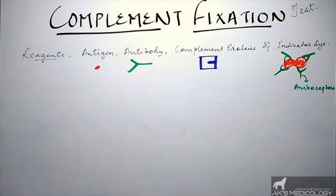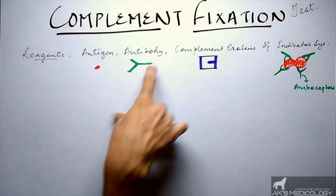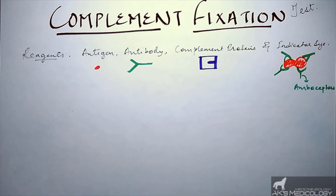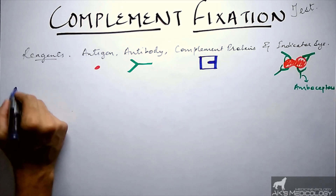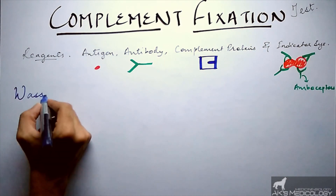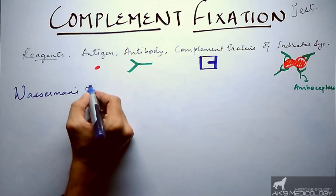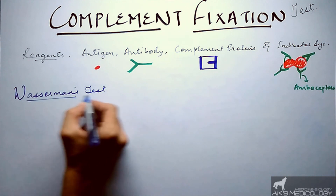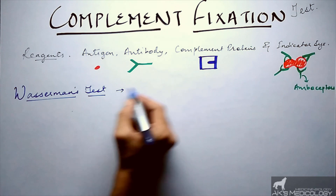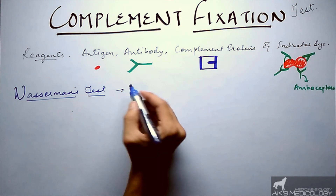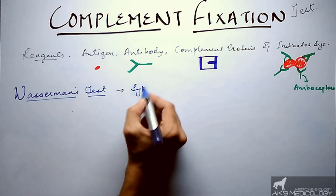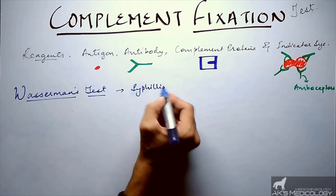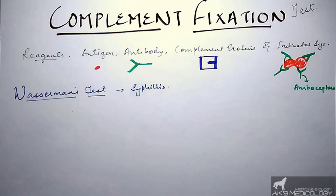To revise, the reagents for complement fixation test are: antigens, antibodies, complement proteins, and the indicator system. One common complement fixation test is the Wassermann test, which is performed to detect antibodies present in the blood for syphilis.